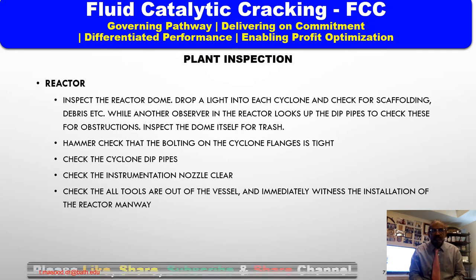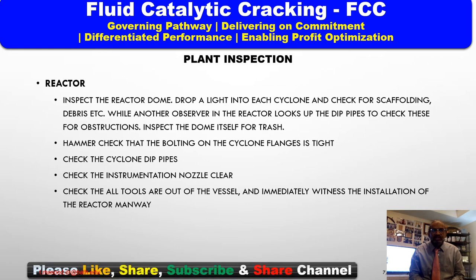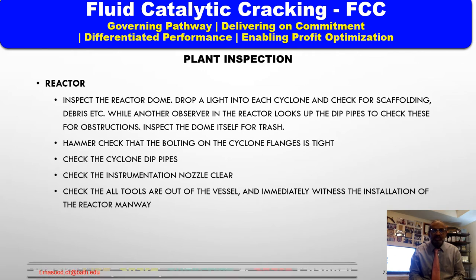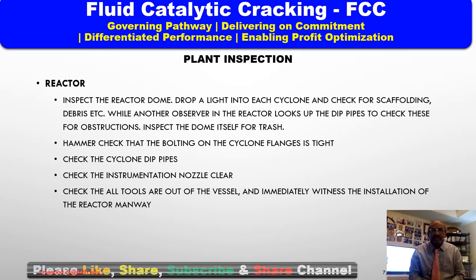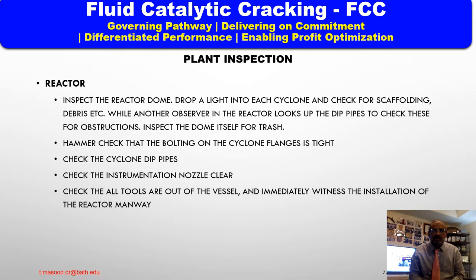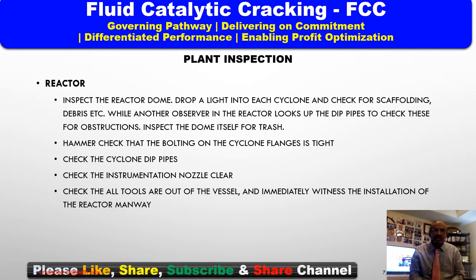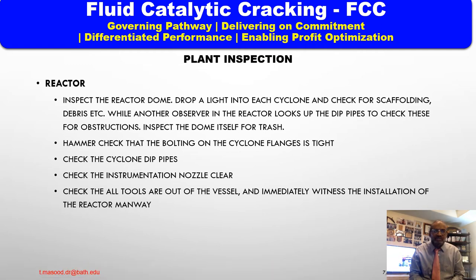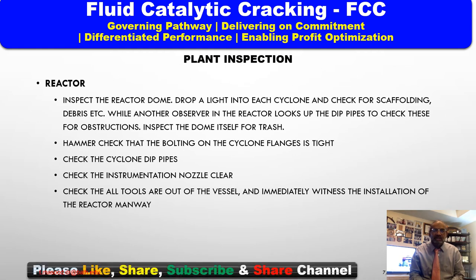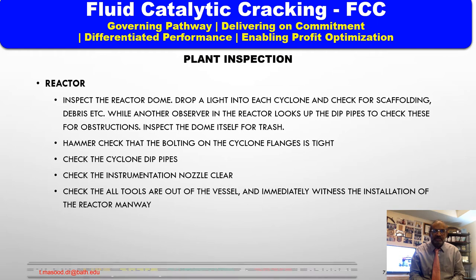Check: number one — that the flanges and abrasions are tight; number two — freedom from obstructions; number three — that the dip pipe flapper welds move freely; number four — that the flapper weld counterweight is correctly positioned as per UOP standard. Next, check that instrument pressure nozzles are clear. Those accessible from inside the vessels can be checked by turning on the aeration air. Those accessible only from the outside can be checked either by rodding or by observing that the check valve is passing aeration air. Last, check that all tools are out of vessels and immediately witness the installation of the reactor manway.